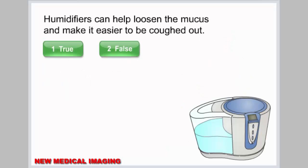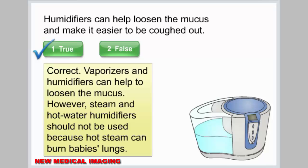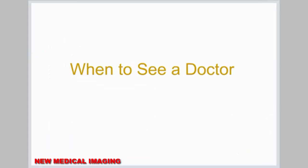Humidifiers can help loosen the mucus and make it easier to be coughed out — true or false. Correct. Vaporizers and humidifiers can help to loosen the mucus; however, steam and hot water humidifiers should not be used because hot steam can burn a baby's lungs.